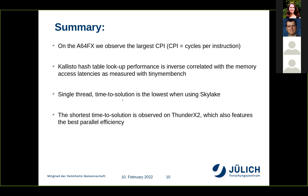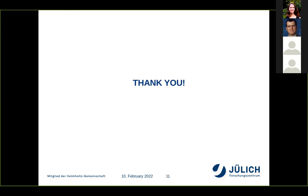As a summary, we observed the largest CPI on A64FX. Calisto hash table lookup performance has an inverse correlation with the memory access latency as measured with tiny membench. The time to solution is lowest for single thread when using a Skylake processor. Overall, the shortest time to solution belongs to ThunderX2, which also shows one of the highest parallel efficiencies in our benchmarking. Thank you very much. If there are any questions, I'd be happy to answer them.